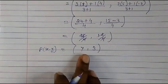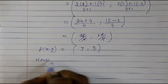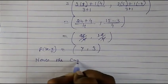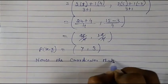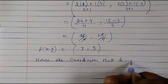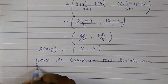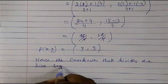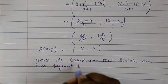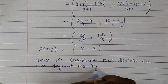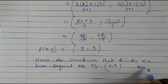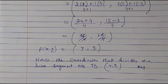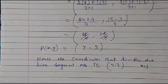Hence, the coordinates of the point that divides the line segment AB in the ratio 3:1 internally is (7, 3). This is the answer. Thank you, God bless you.